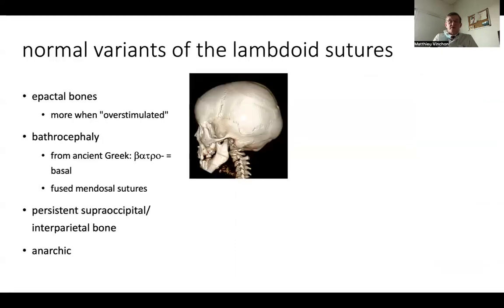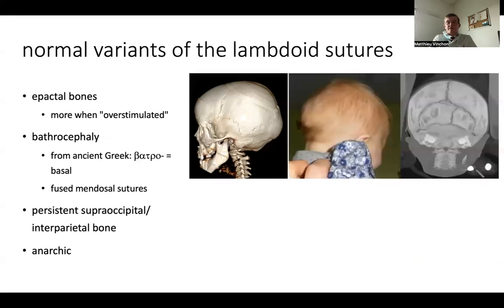The lambdoid suture has many anatomical variations which give rise to the existence of Wormian bones, which are more frequent in cases of overstimulated suture, like in sagittal synostosis, for example. You can also have a typical deformation named bathrocephaly with occipital bulging, which should not be confused with sagittal synostosis, because all the sutures are patent and you have additional sutures corresponding to the fusion of the mendosal sutures, which allows excessive growth of the occipital region.